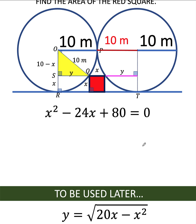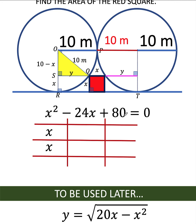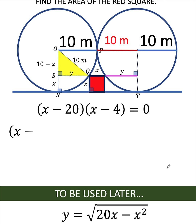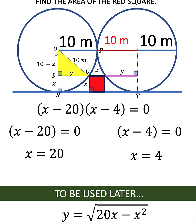This is a quadratic equation that can be solved using factoring. Using the tic-tac-toe method, the factors of x squared are x times x. The factors of 80 that when added result in negative 24 are negative 20 and negative 4. Notice that x times negative 4 gives negative 4x, and x times negative 20 gives negative 20x; when added the result is negative 24x, which is the middle term. So the factors are (x minus 20)(x minus 4) equals 0. Using the zero product property, x equals 20 or x equals 4. Notice that the radius OR is 10 meters and x is just a subset of OR; therefore x cannot be more than 10, so x equals 20 is an extraneous root. We only accept x equals 4.